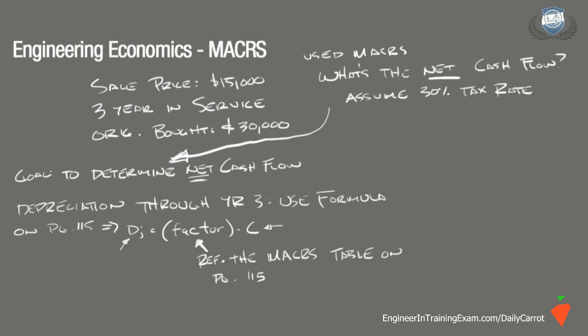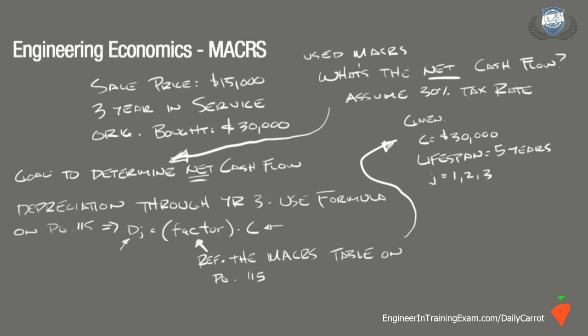It is important to note that these factors are given as percentages and must be converted to decimal when determining the depreciation. In this problem we are given C, or cost of $30,000, a lifespan of 5, and we are interested in years 1, 2, and 3. Referencing the modified ACRS table on page 115, we find that the factor for year 1 is 20%, the factor for year 2 is 32%, and the factor for year 3 is 19.2%.